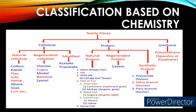Cellulose-based textile fibers are classified into natural cellulose, regenerated cellulose, and modified cellulose textile fibers. Examples of natural cellulose textile fibers are cotton, kapok, flax, jute, hemp, abaca, sisal, coir, etc. Examples of regenerated cellulose textile fibers are viscose, cupro, modal, bamboo, and lyocell. Examples of modified cellulose textile fibers are acetate and triacetate.